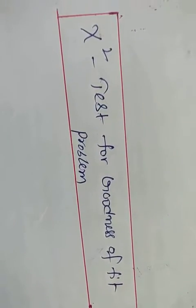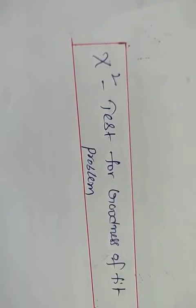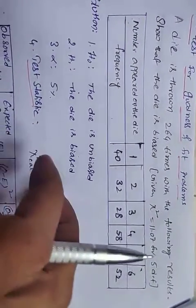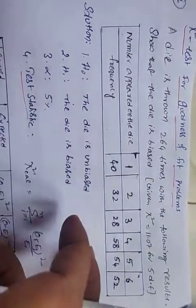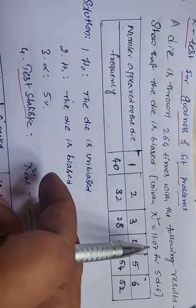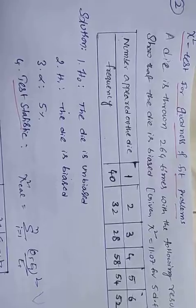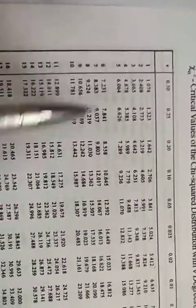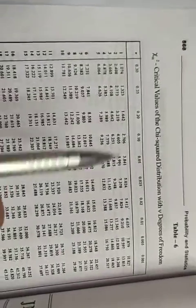For the chi-square test for goodness of fit, the die was thrown 264 times. The following results show that the die is biased. The chi-square table value is 11.07 with 5 degrees of freedom at 5 percent significance level.